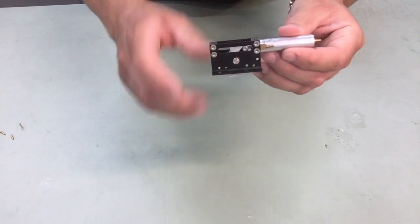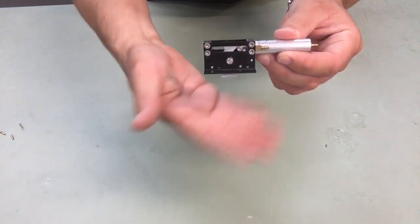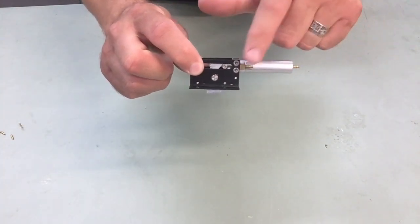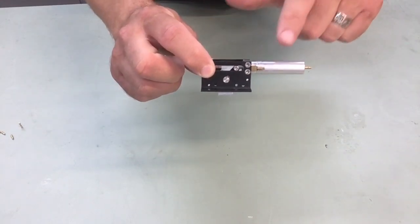Now, if you want to slow down your retraction, then you would put your restrictor on this airline that comes off of this nipple.